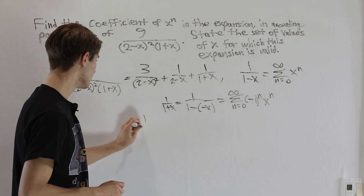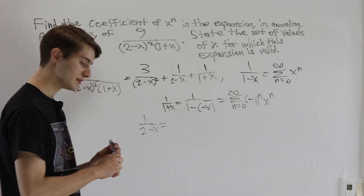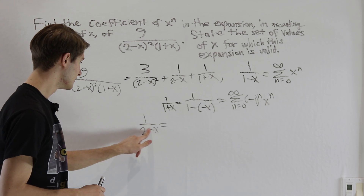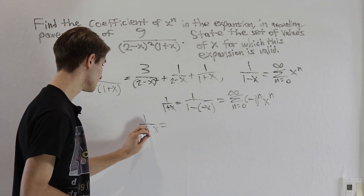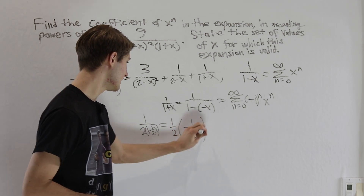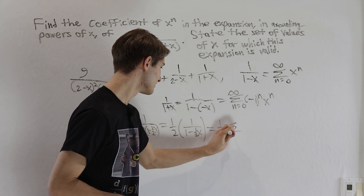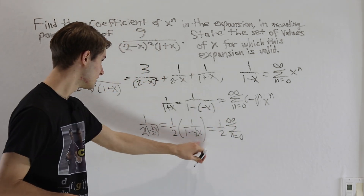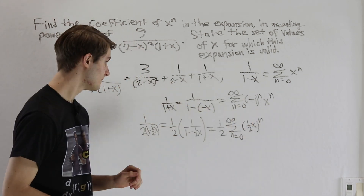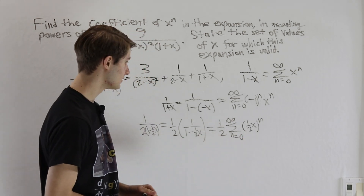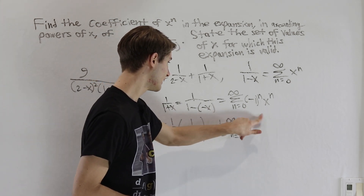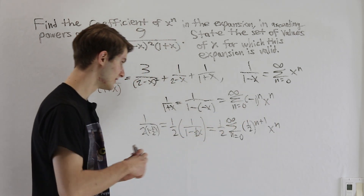Next, for 1 over (2 minus x), we factor out a 2 from the denominator: 2 minus x equals 2 times (1 minus one-half x). So 1/(2 minus x) equals one-half times 1/(1 minus one-half x), giving us one-half times the sum from n equals 0 to infinity of (one-half x) to the n. Bringing the one-half inside, we get the sum of (one-half) to the n plus 1 times x to the n.